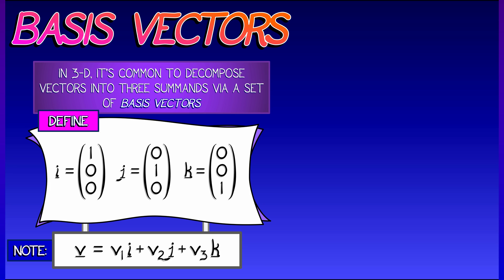The thing is any vector v can be decomposed as a linear combination of v1 times i plus v2 times j plus v3 times k. So what we're doing is we're using matrix addition and scalar multiplication to decompose vectors.